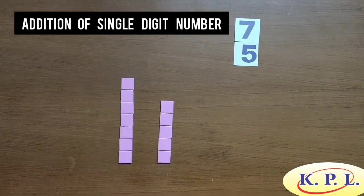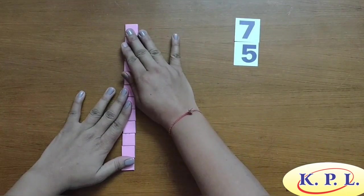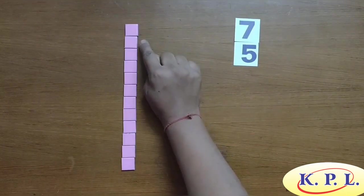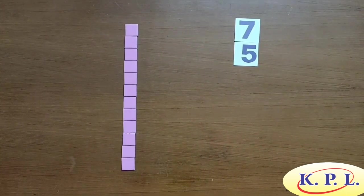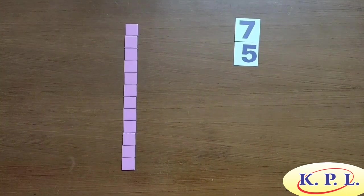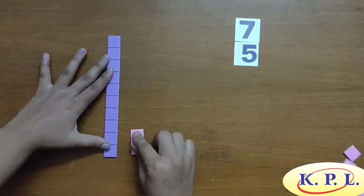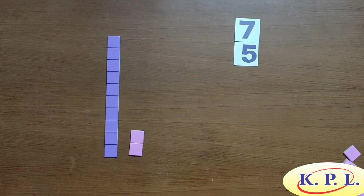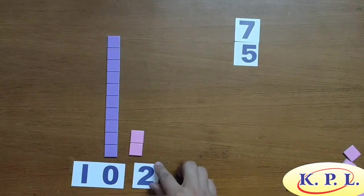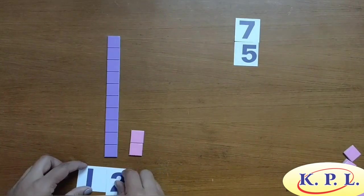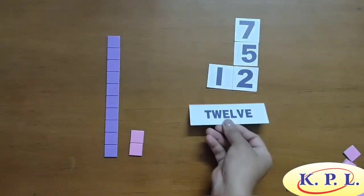Addition of single digit number. Add 7 and 5. Let us count how many units there are: 1, 2, 3, 4, 5, 6, 7, 8, 9, 10, 11, 12. We know that for 10 units, we can replace it with a strip of 10 units. A strip of 10 units is 10 and 2 ones units is 2. 10 plus 2 is 12. In words, it is represented as 12.